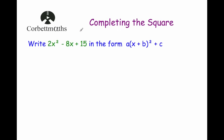Hi, welcome to this Corp Miles video on completing the square. In this video we're going to look at how to complete the square for expressions that have got an x squared term such as 2x squared, 3x squared, or 4x squared, rather than just an x squared. Our first question says write 2x squared minus 8x plus 15 in the form a(x + b)² + c.